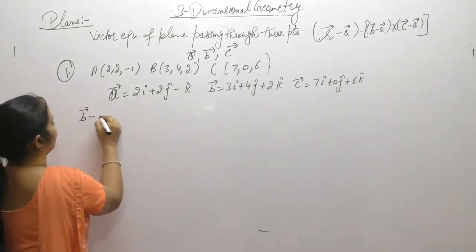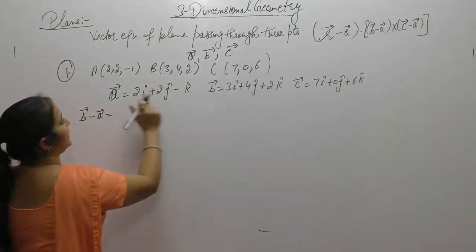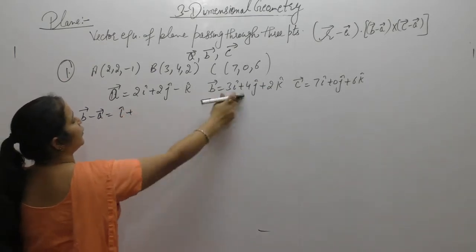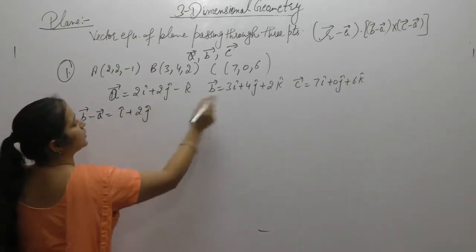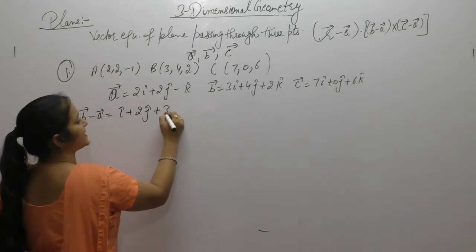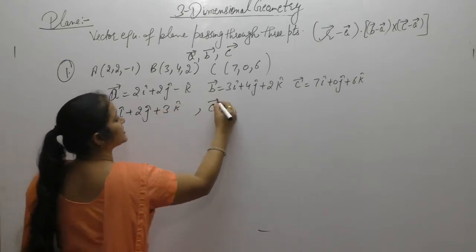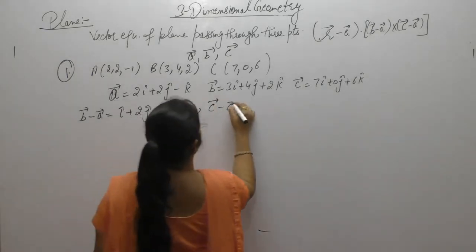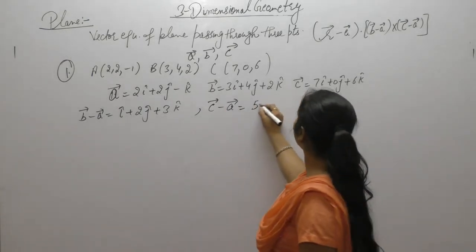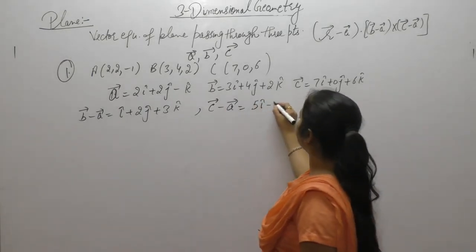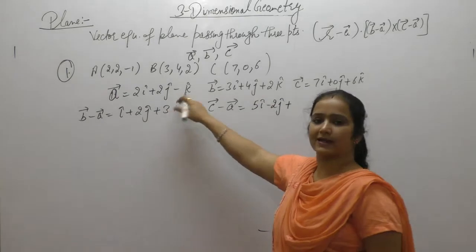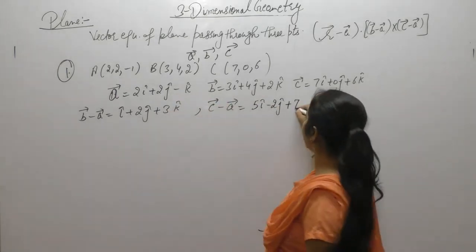So B vector minus A: (3-2), (4-2), (2-(-1)) gives i + 2j + 3k. Now C vector minus A: (7-2), (0-2), (6-(-1)) gives 5i - 2j + 7k.